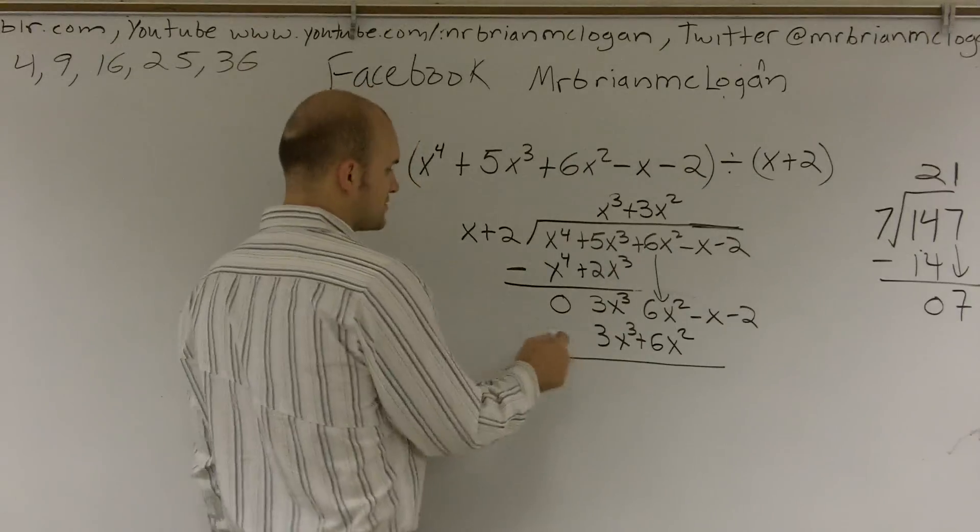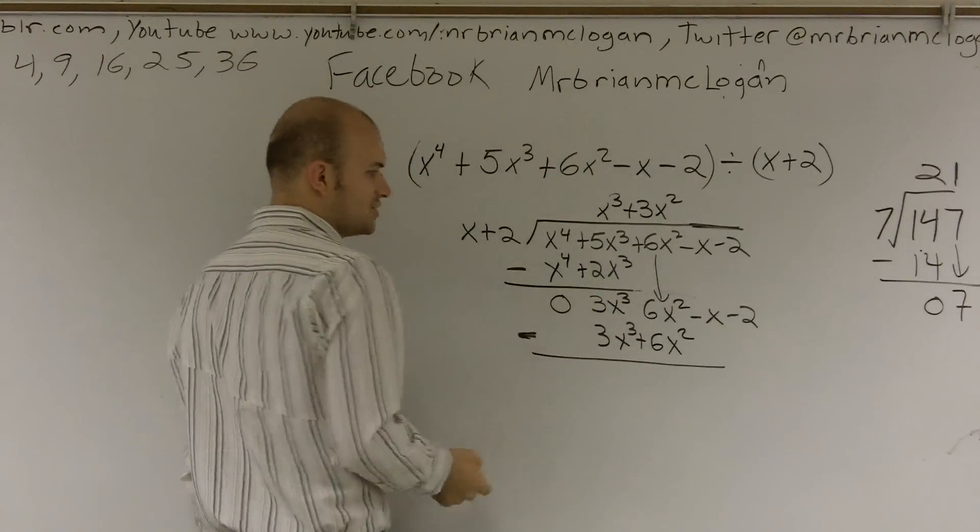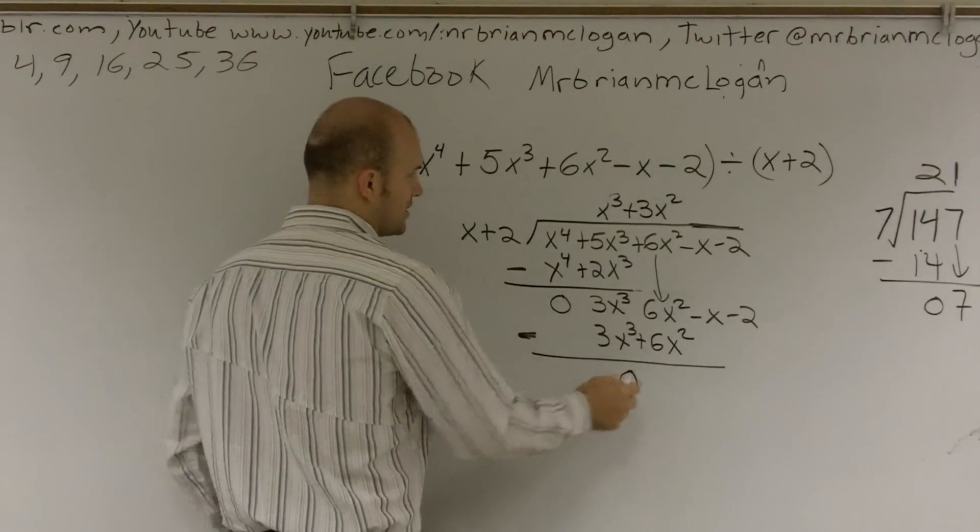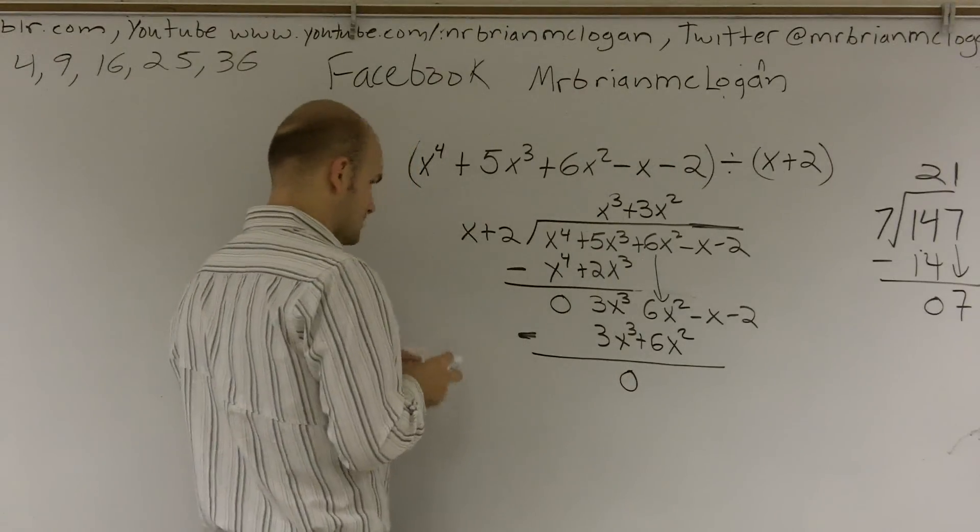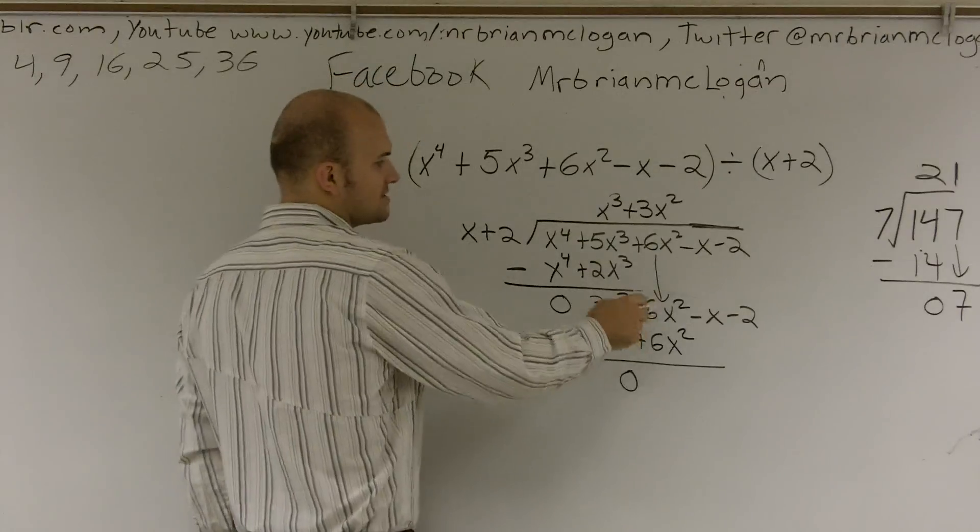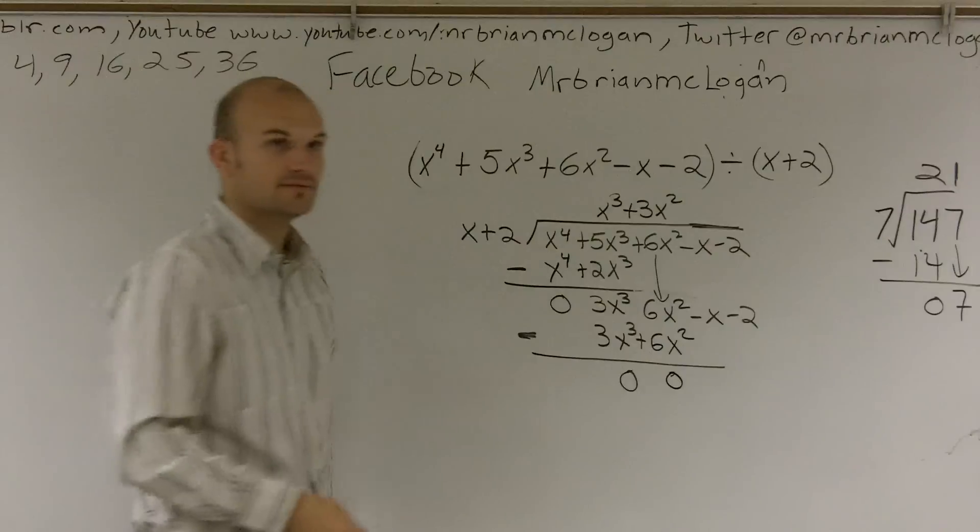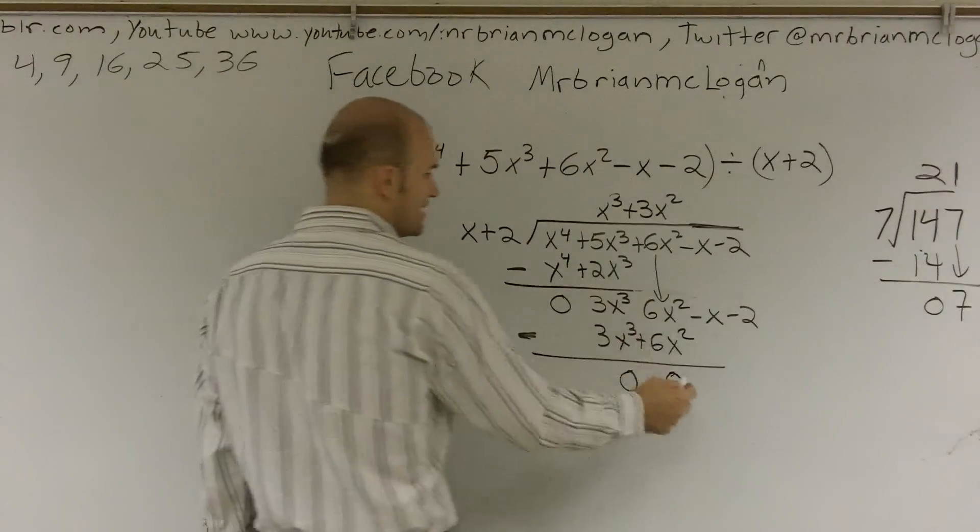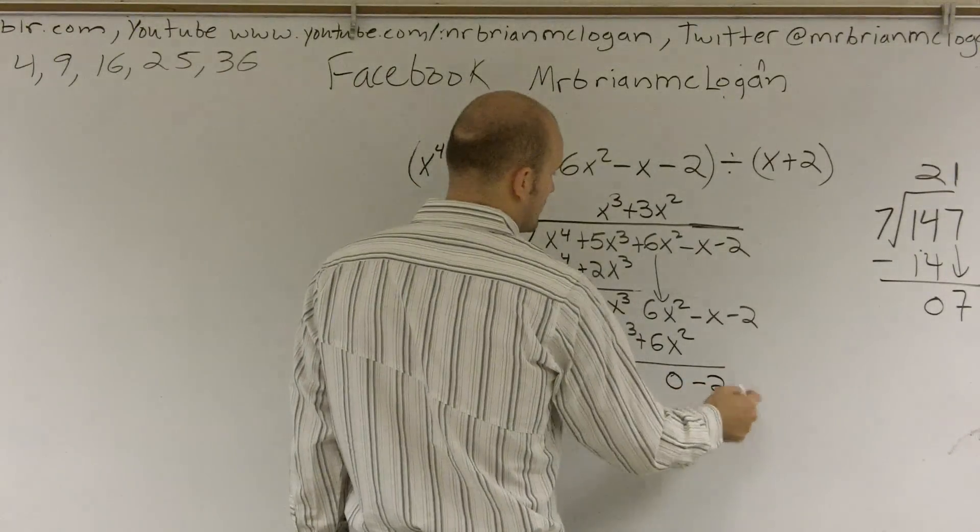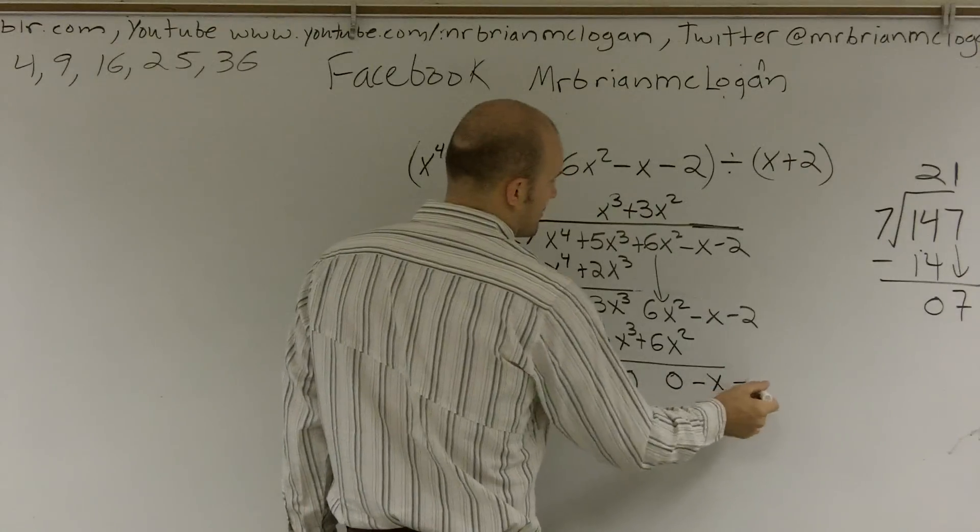And now I can write down this. 6x squared minus x minus 2. All right? So now I'm going to subtract again these two rows. So I say 3x cubed minus 3x cubed is 0. And 6x squared minus 6x squared is going to be 0, right? So then I bring down a negative x minus 2.